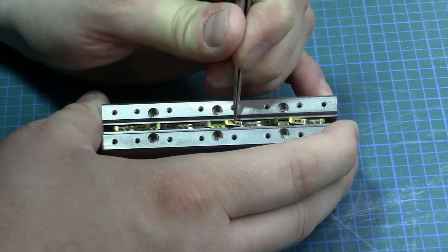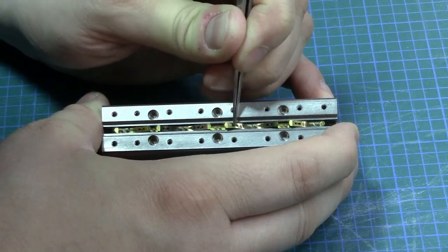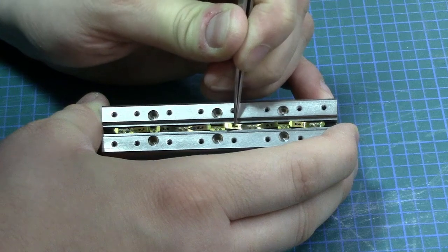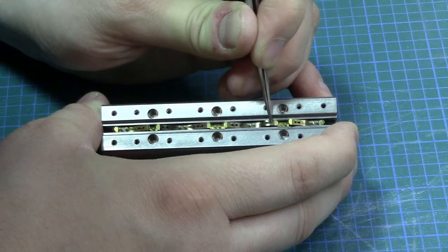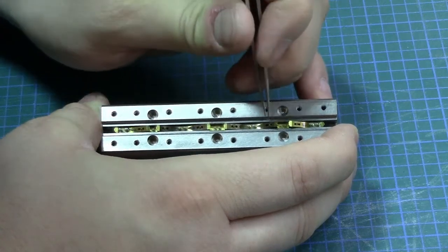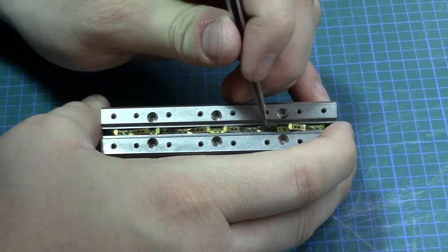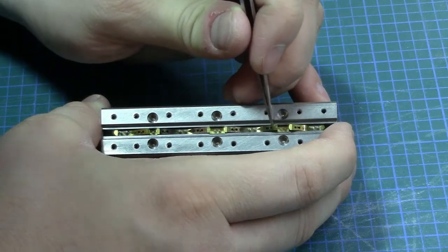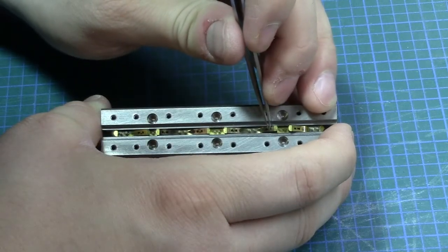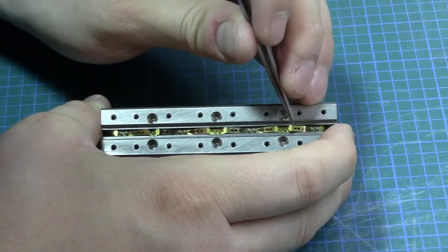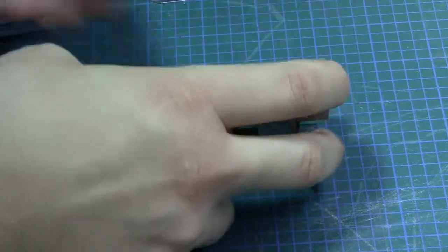There you go. So, just go ahead and do that for all six of the attenuators pistons. Like I said, I found that pushing them on the inside towards the sort of the center of the mount is easier, but your mileage may vary.